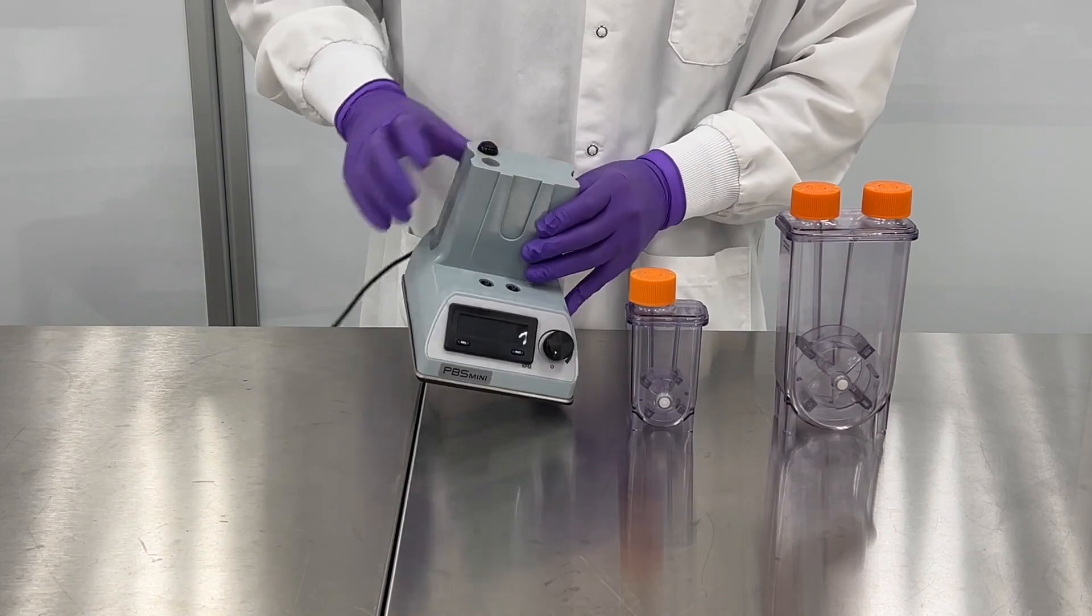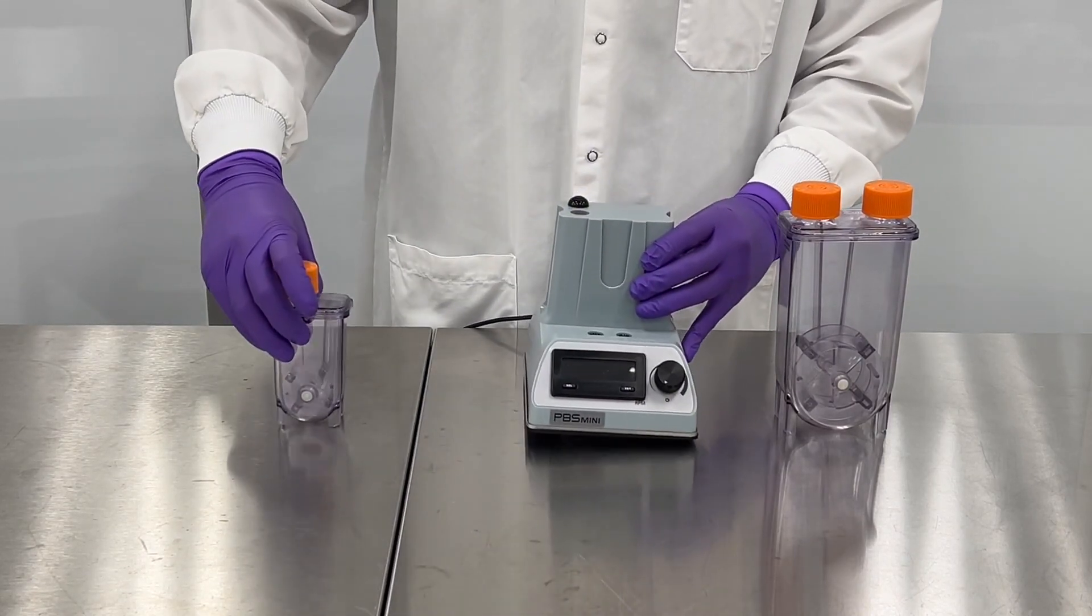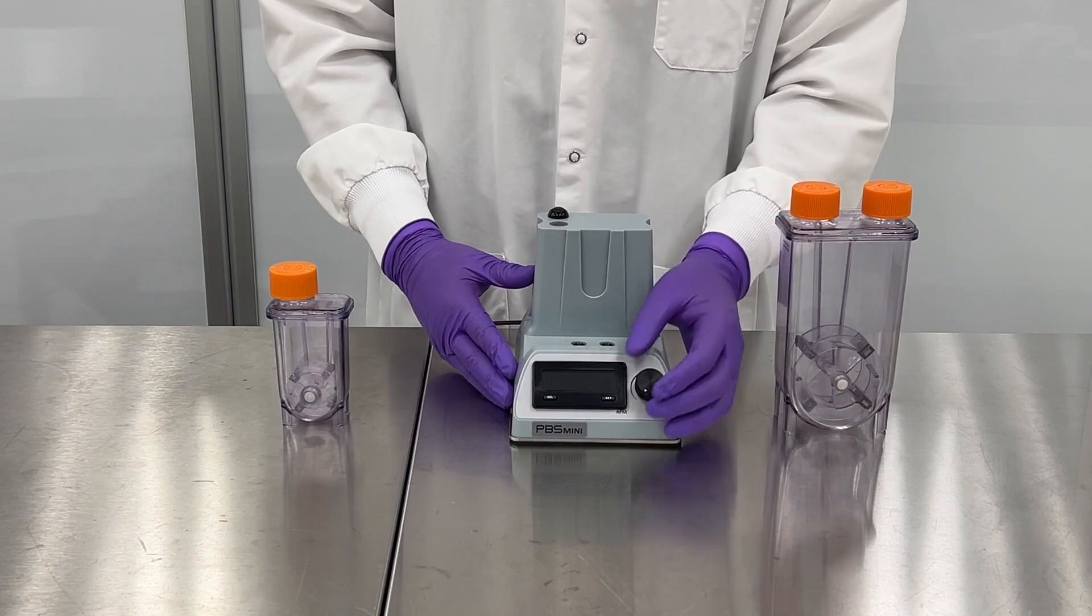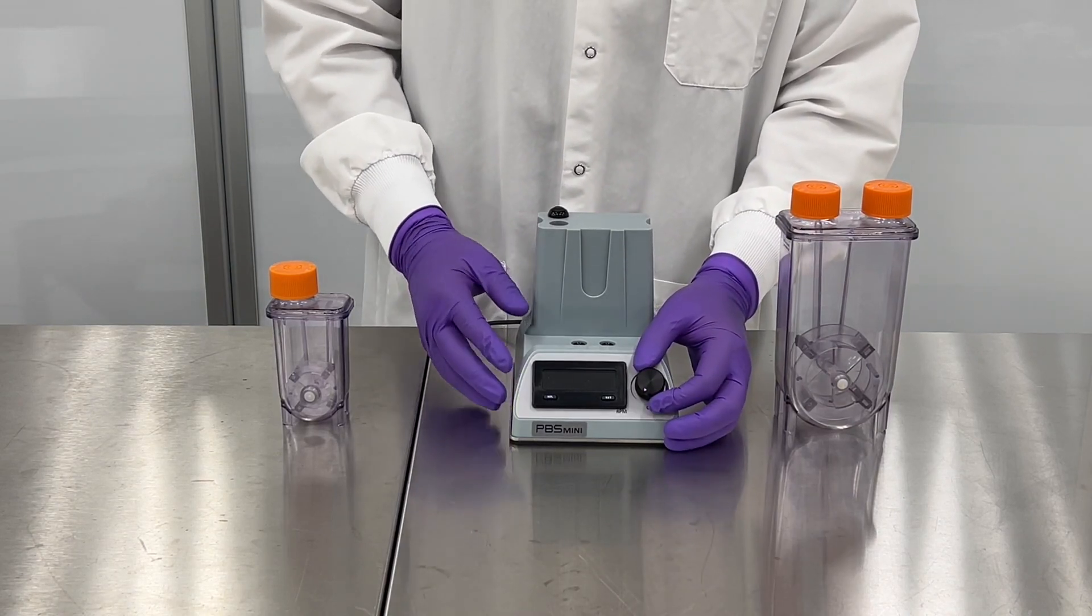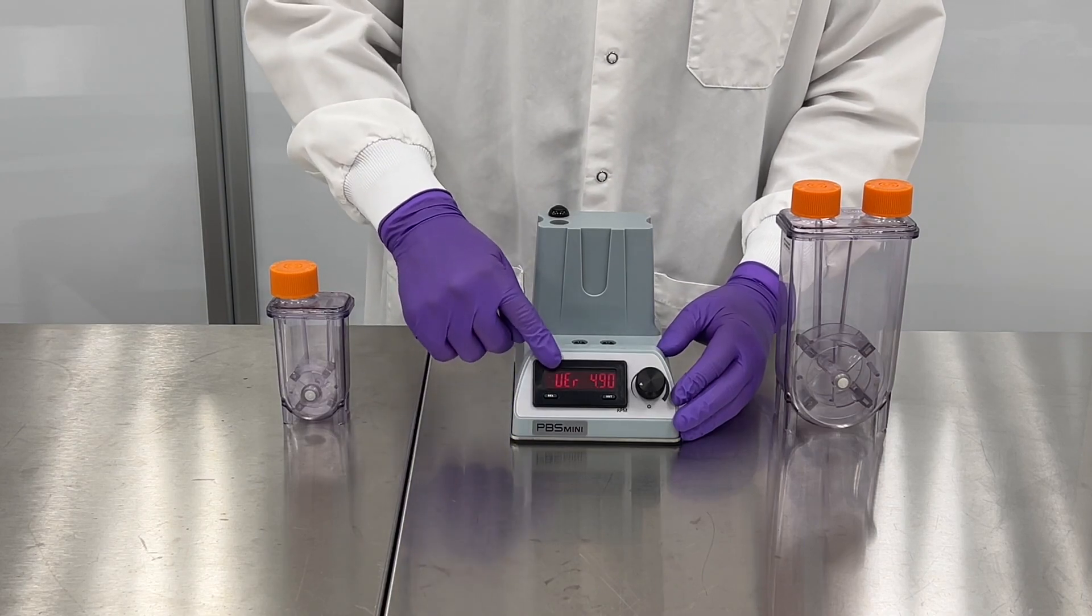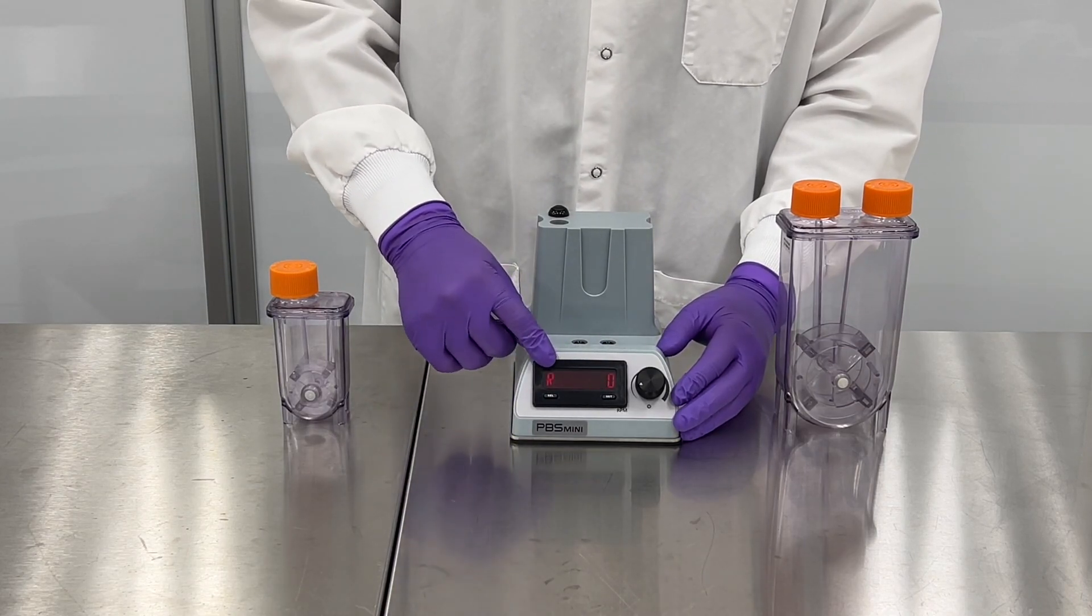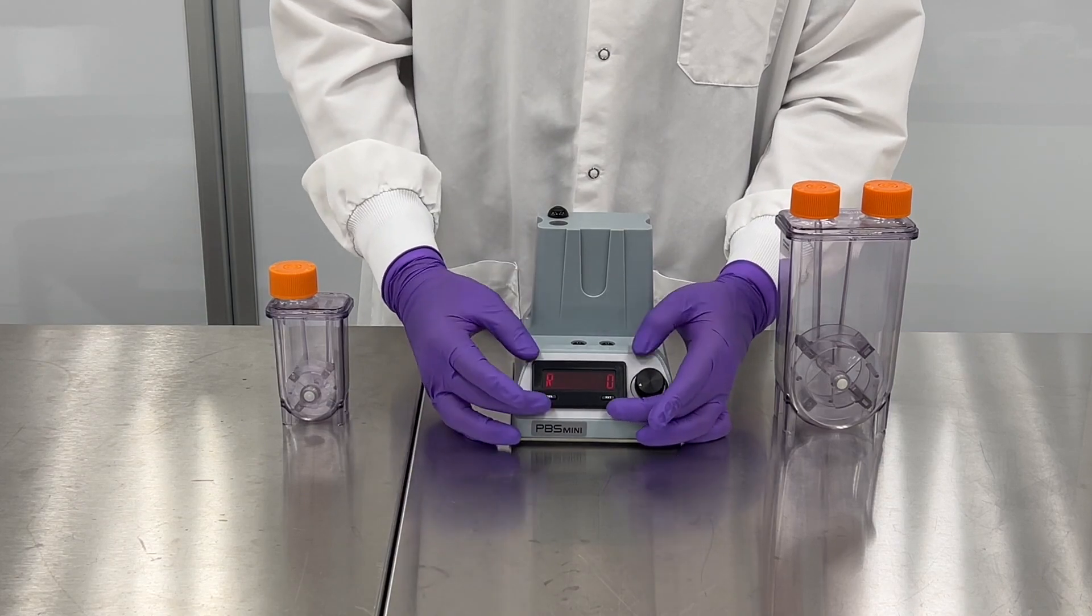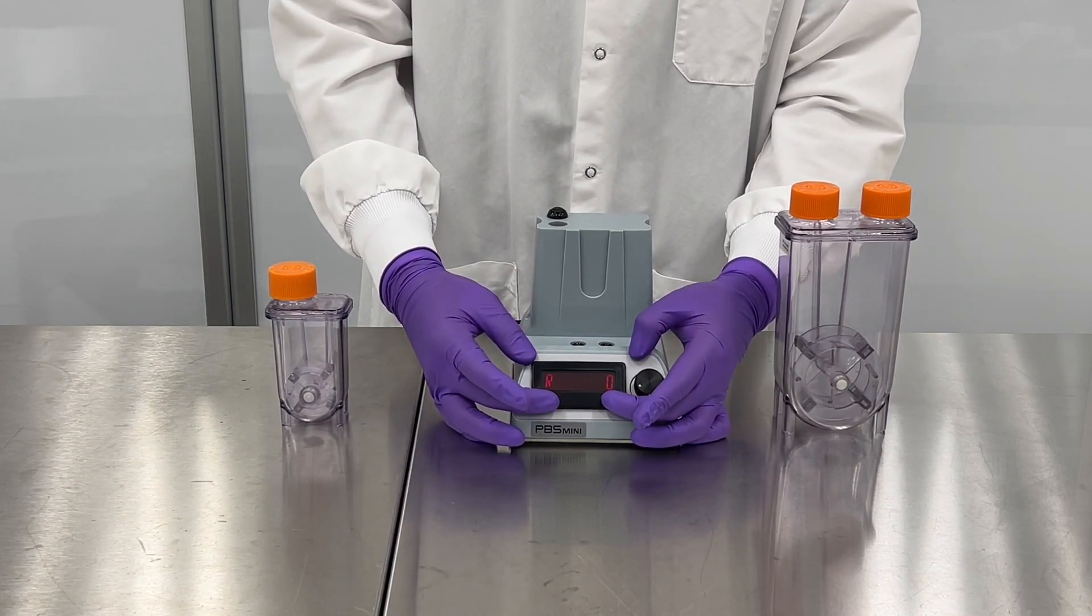So here I have the mini base. I already have it plugged into some standard AC power and looking at the functions and features of this we have our speed adjust dial that actually also activates the screen. This speed adjust display will show your speed in RPM and then we have these two buttons right here that are exclusively for factory settings so they won't be functional at the customer site.